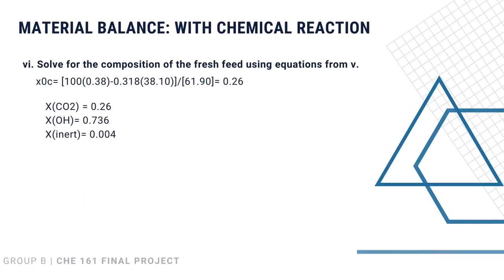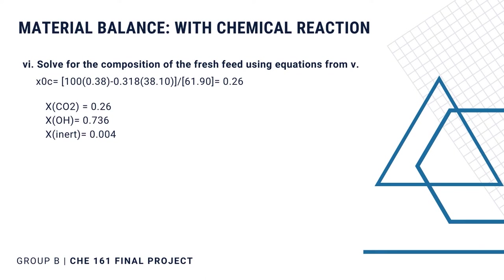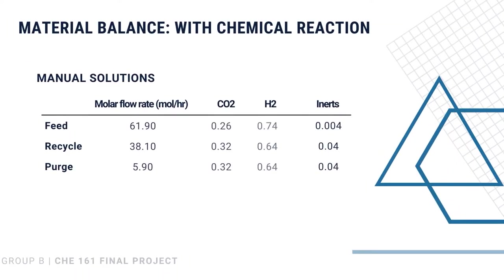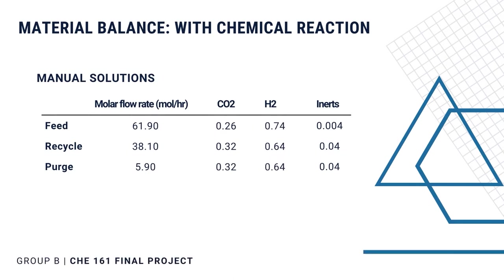Sixth, to get the composition of the fresh feed, we substitute the values from the compound balance equation in the fifth step, which results in these values. Then, this is the summary of our computed values. We will use the molar flow rate and composition of the feed stream in WSIM.